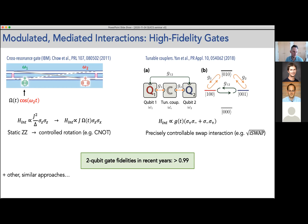The key insight has been not just using the static interaction and tuning frequencies, but also adding another layer of mediation and modulation of these interactions. That has resulted in high-fidelity gates that have, in the last couple of years, exceeded 99% in some of the most advanced experiments.